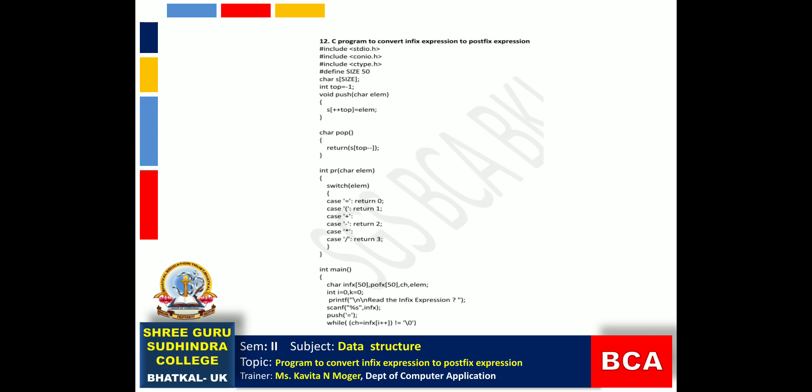The precedence function takes a character element and returns an integer. A switch-case is used: case '=' returns 0; case open bracket returns 1 — an open bracket can sit on any other operator or any operator can sit on the open bracket. Case '+' and '-', which have left-to-right associativity, return 2. Case '*' and '/' also have left-to-right associativity but higher priority, so they return 3.